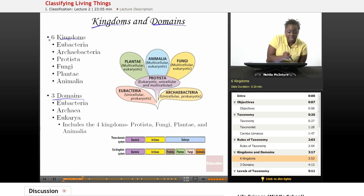So we have six kingdoms. We have what we call the eubacteria kingdom. We have the kingdom archaebacteria. We have the kingdom protista. We have the kingdom fungi. We have the kingdom plantae. And we have the kingdom animalia. And we'll discuss each of these kingdoms individually.